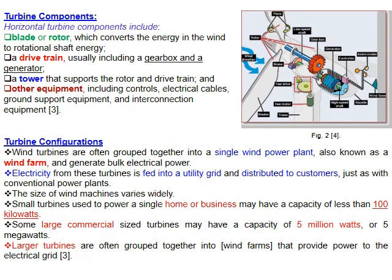Turbine components include the blades and rotor connected to a shaft, which connects to a gearbox. The gearbox increases rotational speed going into the generator, which produces electricity delivered to the load. When many wind turbines are placed together, we call it a wind farm, which generates a huge amount of energy fed to the grid.